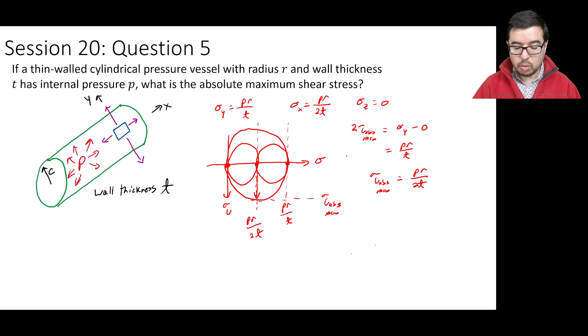Okay, and so once again, we've used Mohr's circle and very minimal algebra, but using some geometry to calculate out what the absolute maximum shear stress would be. And this is a common result.